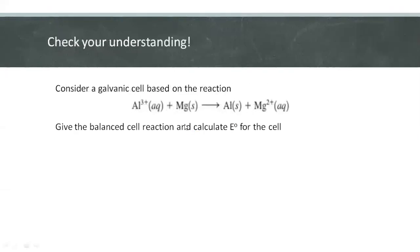So let's have your check your understanding. Consider this galvanic cell of aluminum and manganese. Give the balanced cell reaction and calculate the cell standard reduction potential for the cell. Use the table as your guide in identifying the common half-reactions.